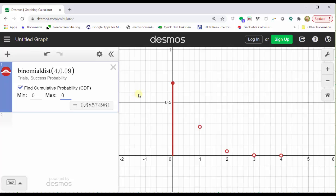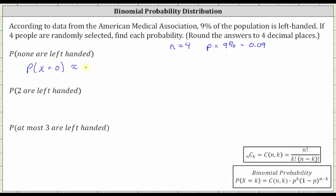Let's go ahead and record this probability, 0.6857. Next, we're asked to find the probability that two are left-handed, which is the probability that X is equal to two. Let's go back to Desmos.